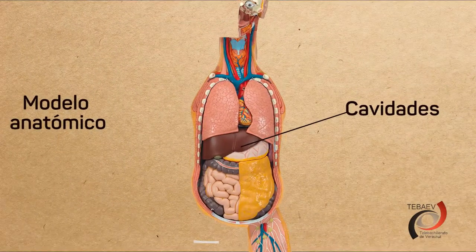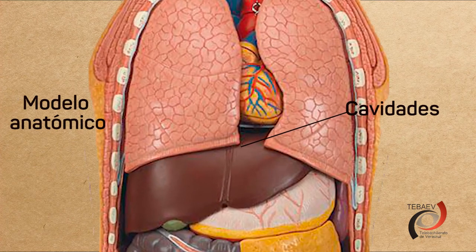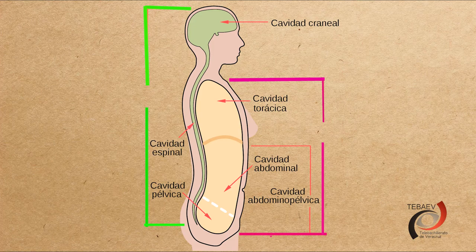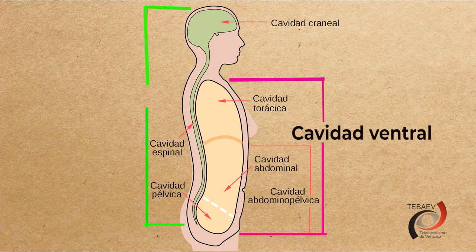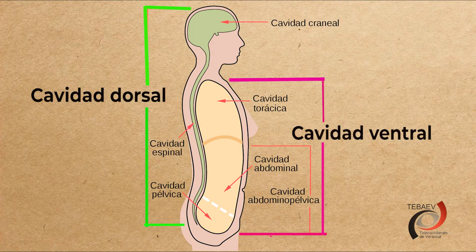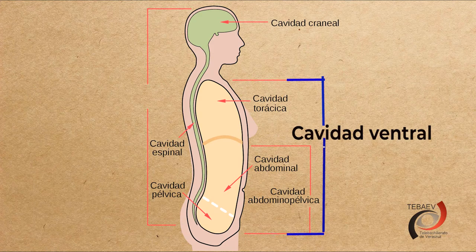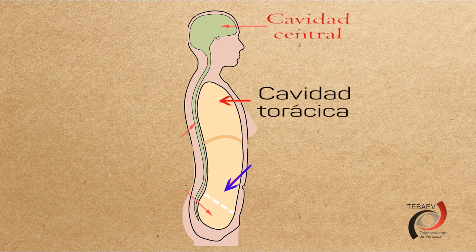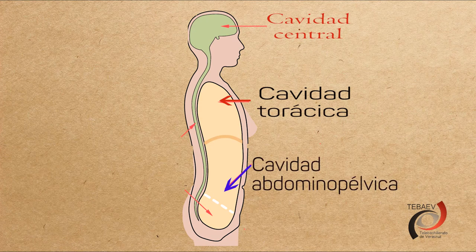En un modelo anatómico podemos apreciar estas cavidades de manera didáctica. Las dos cavidades principales del cuerpo son la cavidad ventral y la cavidad dorsal. La ventral es la cavidad más grande y está subdividida en dos cavidades. La primera de ellas es la cavidad torácica, que se ubica arriba del diafragma, un músculo respiratorio en forma de cúpula. En la parte inferior al diafragma se encuentra la cavidad abdominopélvica.